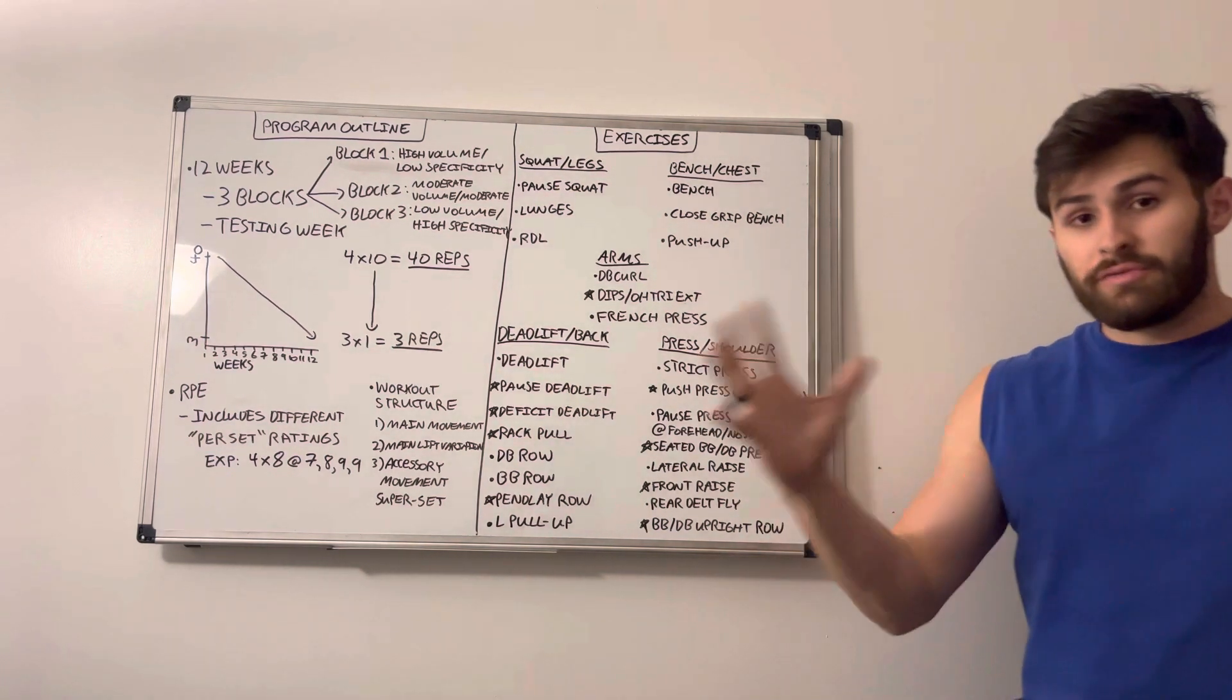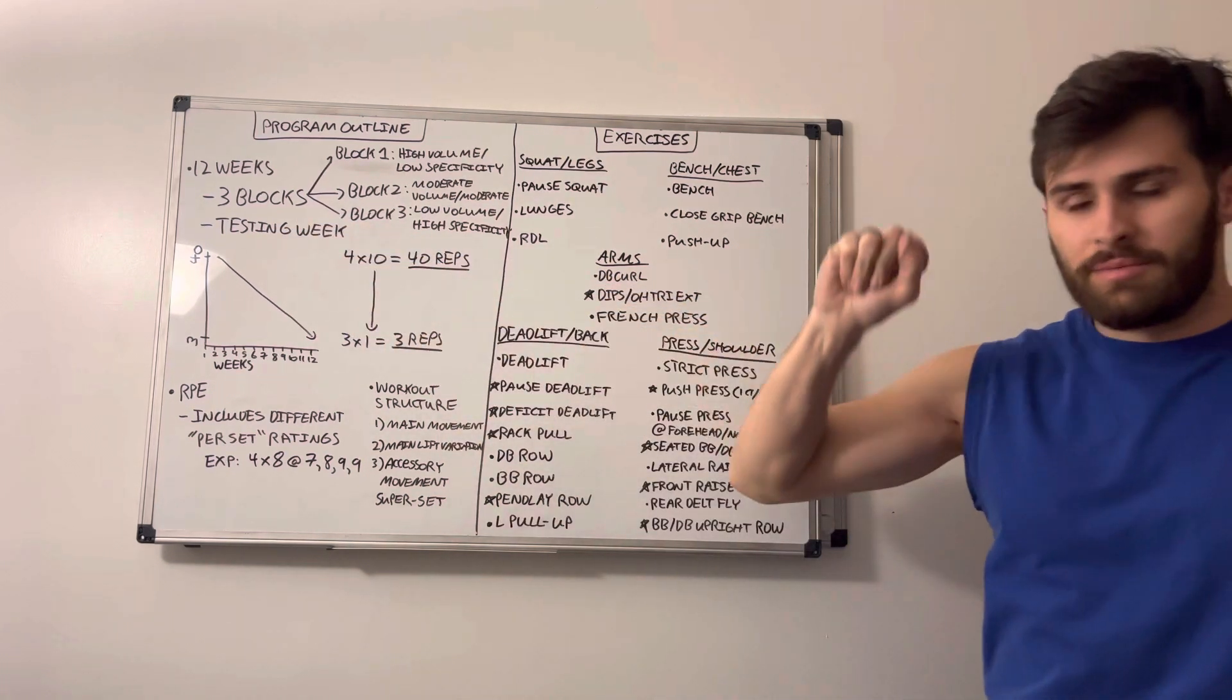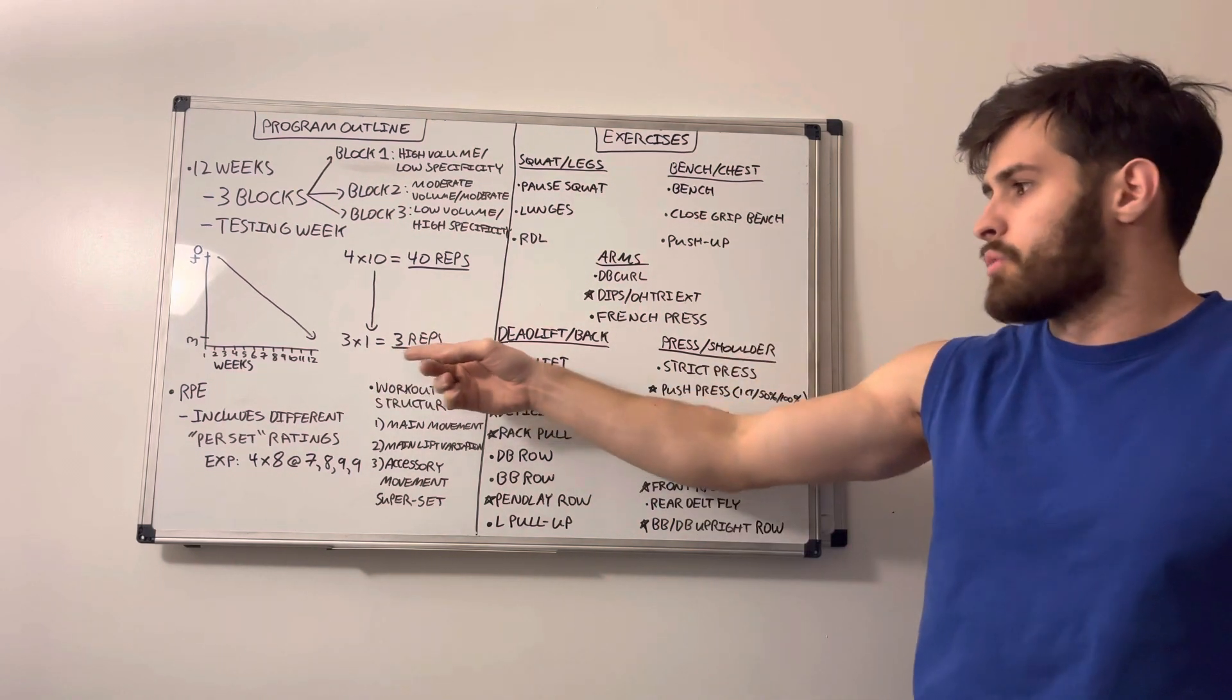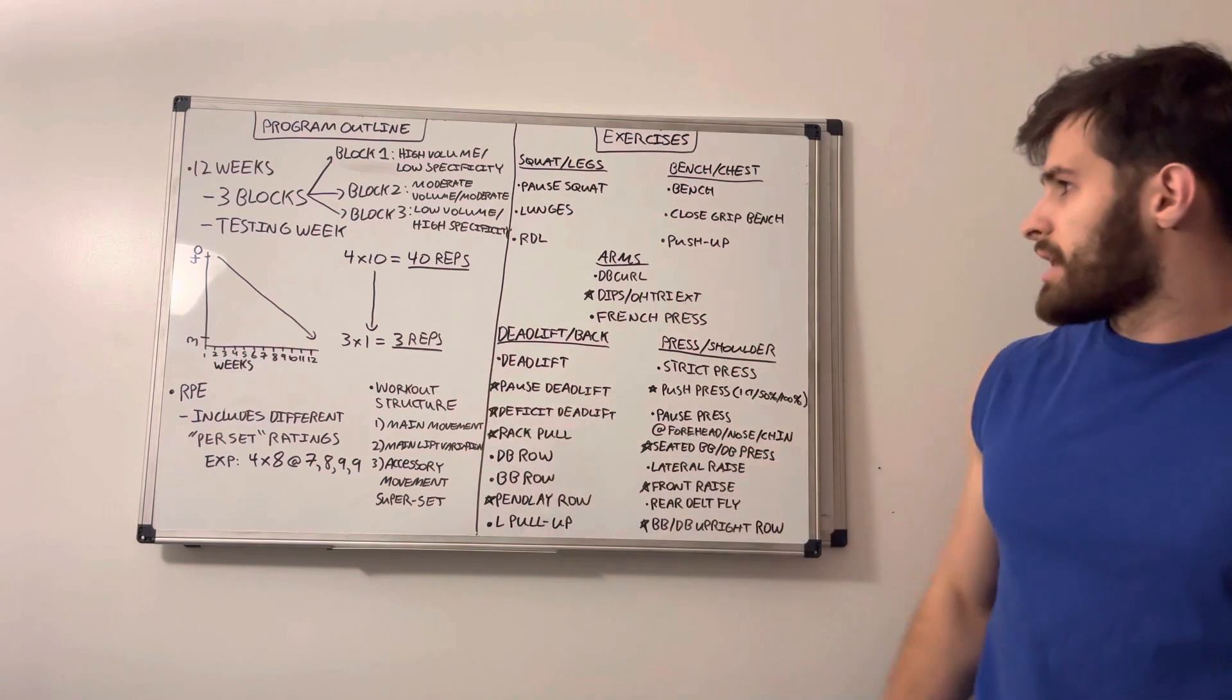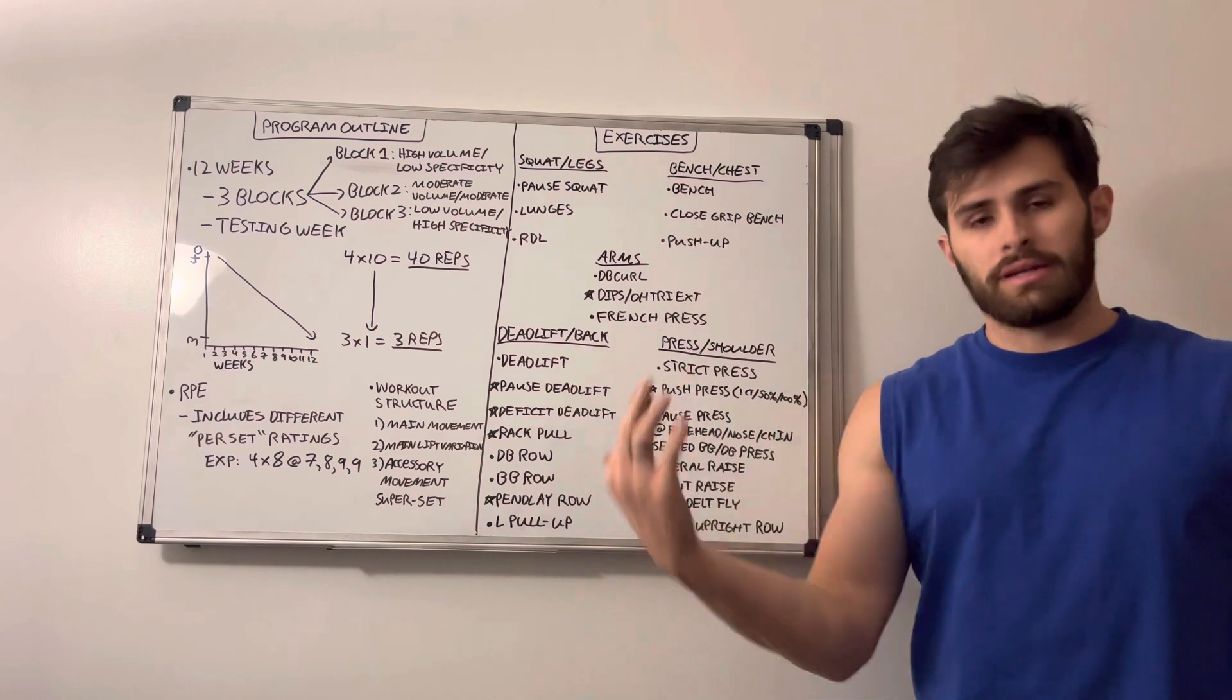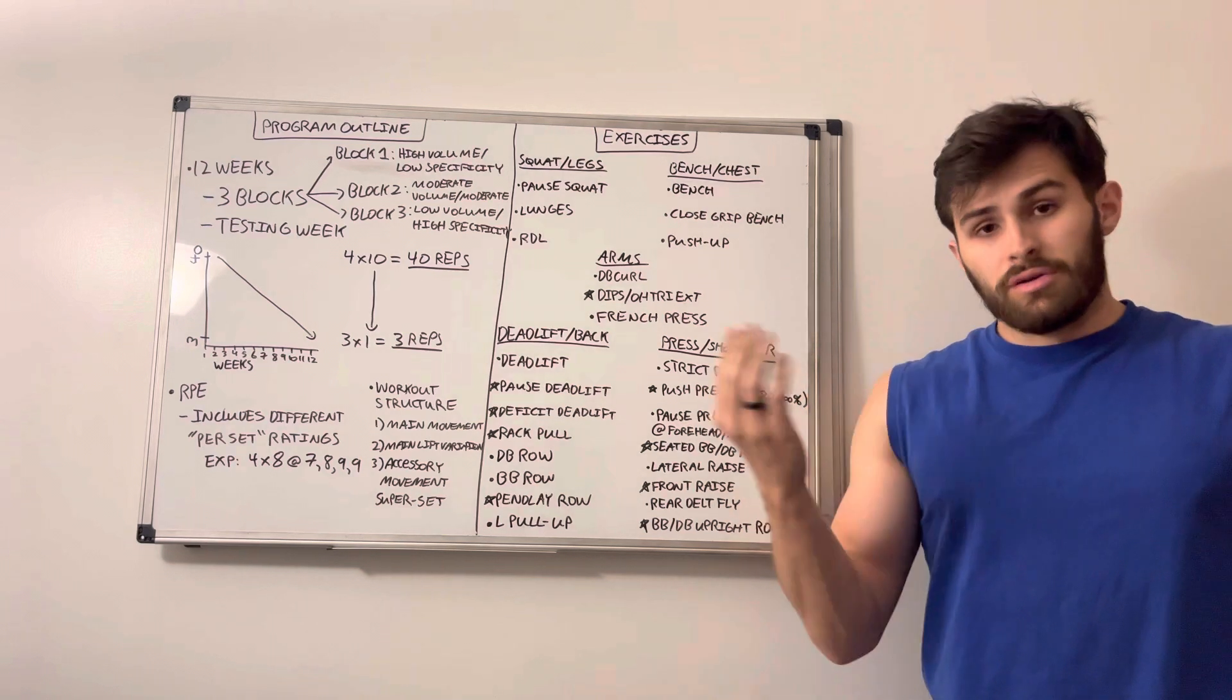All right, so just a brief recap of everything we've talked about. We talked about the program outline, the way that the weeks are set up, our three blocks, we have a testing week at the end of the program. This is the way that the volume is going to work. So it's going to be higher volume, which is pretty different from the program we just ran, but we're going to taper down into a more specific higher load, lower volume week where we're going to be testing out our main lifts. We're going to be using RPE again, slightly variations with that, our workout structure, we covered that. And these are the movements, a mixture of things that are familiar, but also some new variations that are really going to help us, especially up our overhead press, but also help to maintain or increase our other main lifts as far as the barbell movements are concerned. So that's a brief outline and presentation of our Steel Press Protocol.